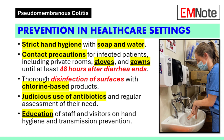Preventive measures in healthcare settings include strict hand hygiene with soap and water, contact precautions for infected patients including private rooms, gloves, and gowns for staff and visitors until at least 48 hours after diarrhea ends. Thorough disinfection of environmental surfaces with chlorine-based products, judicious use of antibiotics, education of staff and visitors on hand hygiene and transmission prevention, and regular assessment of the need for antibiotics and gastric acid suppressants are all recommended.